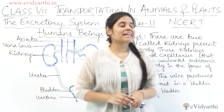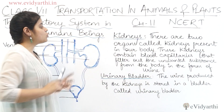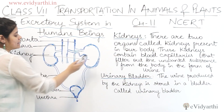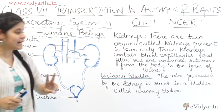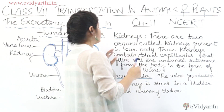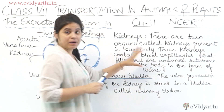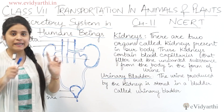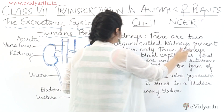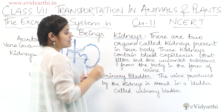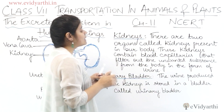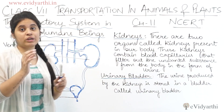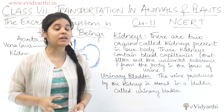The first organ we will read about is the kidneys. There are two kidneys present in our body. These kidneys contain blood capillaries — when vessels are very small we call them capillaries. These kidneys filter out the unwanted substances from the body in the form of urine.